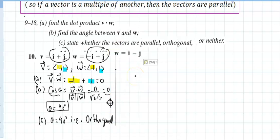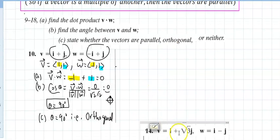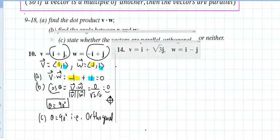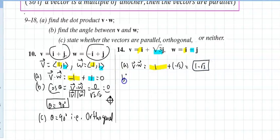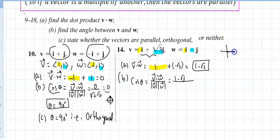The next problem is number 14. Of course, a vector can't be both perpendicular and parallel at the same time. For part (a), v dot w equals 1 times 1 plus √3 times (−1), which gives 1 minus √3. For part (b), find the angle: cosine of theta equals v dot w over magnitude of v times magnitude of w, which is (1 − √3) over the magnitudes.